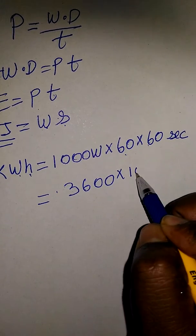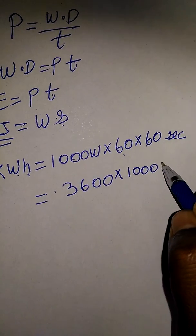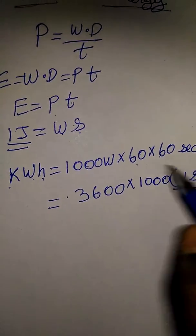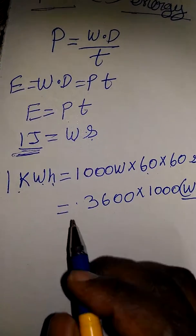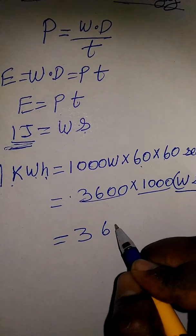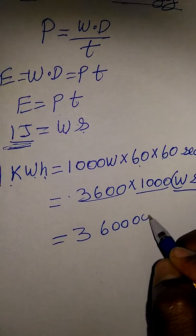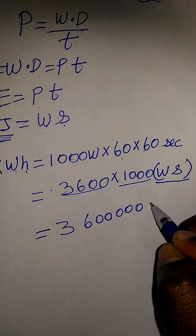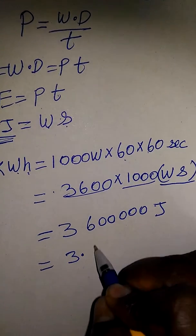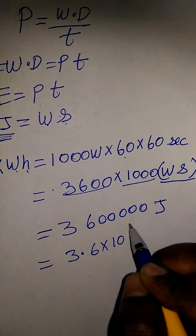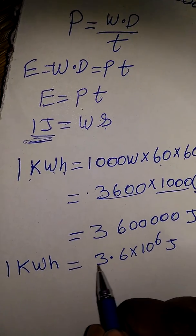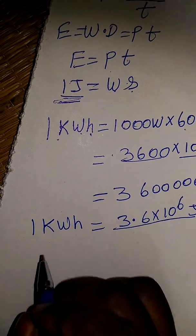3,600 into thousand, then watt-second. Already we know watt-second is the SI unit of energy. The SI unit of energy is joule, so it's a multiplication of 3,600 into thousand—3,600,000 watt-seconds is a representation of joule. So the same thing we can write 3.6 into 10 power 6 joules. So 1 kWh is equal to 3.6 into 10 power 6 joules.